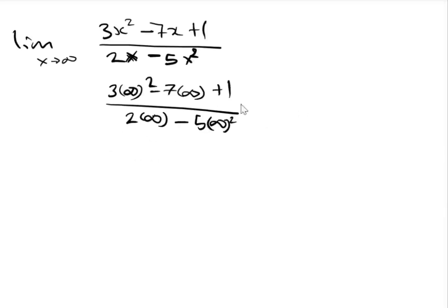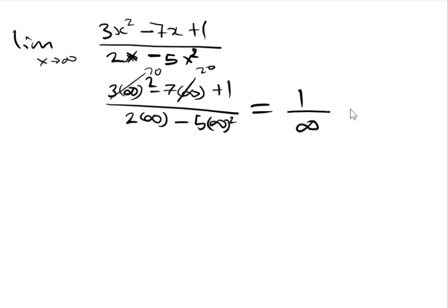This is the same as infinity minus infinity in the numerator, which still gives infinity, and a real number divided by infinity is 0. So you see that using direct substitution in this case doesn't work, because if we continue using direct substitution all the solutions would be 0.